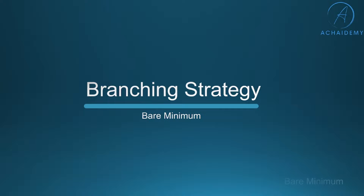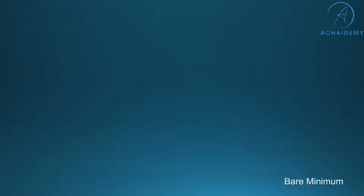By default when we create a git repository, we will have the main branch as the default branch. From the main branch we create two new branches: QA and develop. The QA branch is taken out of the main branch and the develop is taken based on the QA branch.